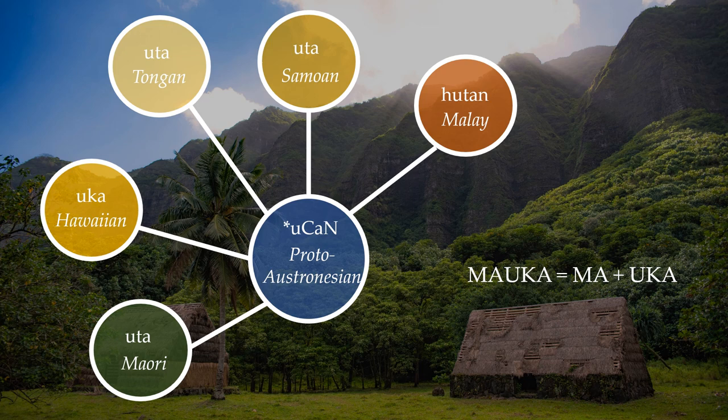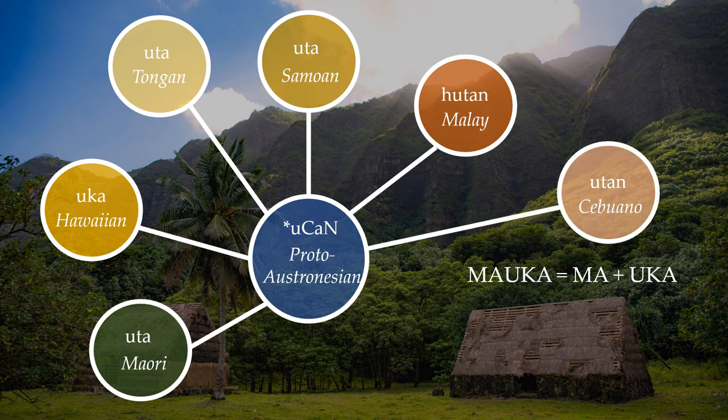There are interesting developments in other languages. For example, in Cebuano, utan means vegetables — Filipinos, please correct me if I'm wrong. You can see the relationship: in ancient times, when people went inland from the sea, they would go into the jungle, where the hills are, and that's also where people would often pick vegetables and plants to eat. So vegetables from the land — inland is utan or uka, which is where the forests are. That's the connection.